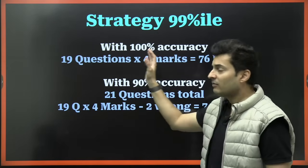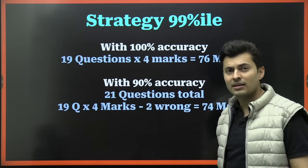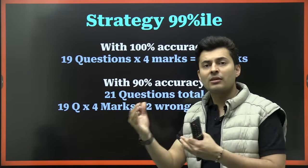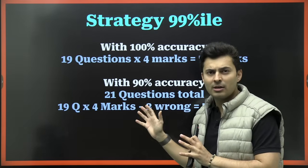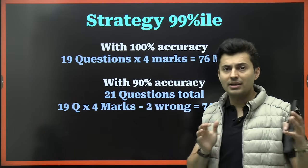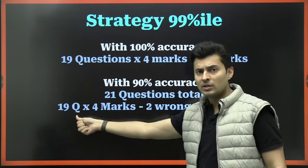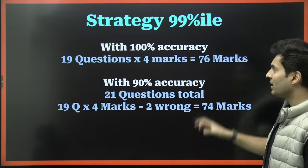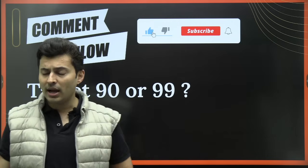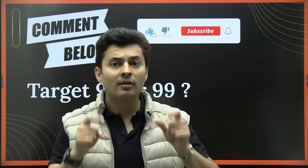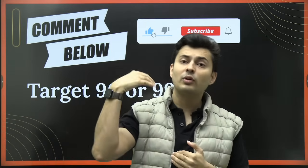For 99 percentile — which is around 75 to 80 marks — study these chapters: current electricity, modern physics, gravitation, KTG and thermodynamics, magnetic effects of current, kinematics, geometrical optics, electrostatics, SHM, waves, EMI, and AC. That's just 10 chapters. With 100% accuracy, solve 19 questions for 76 marks. With 90% accuracy, attempt 21 questions — 2 wrong, 19 correct — giving you 74 marks and putting you close to 99 percentile. Give mock tests to know where your accuracy stands; bare minimum is 85 to 90 percent.